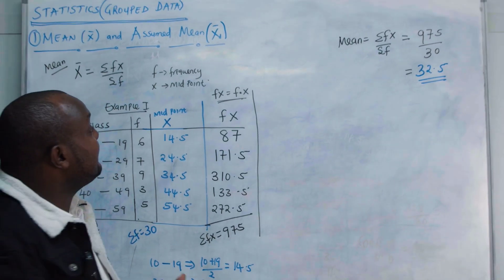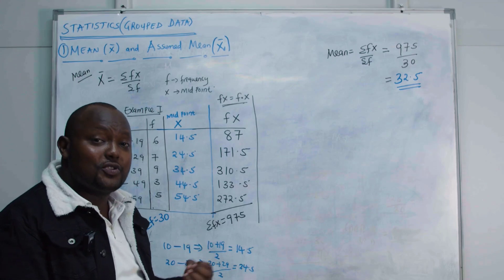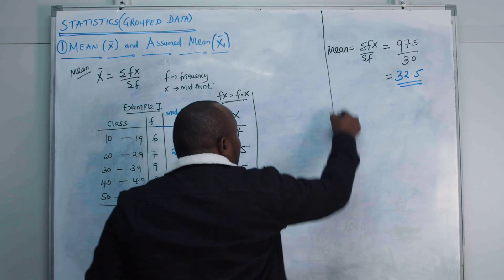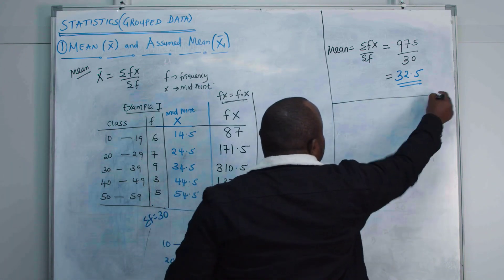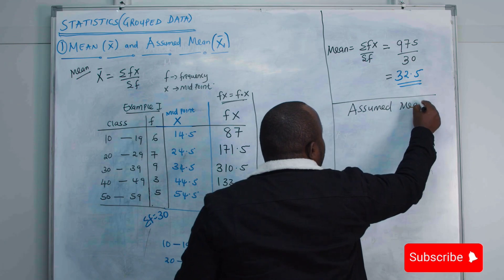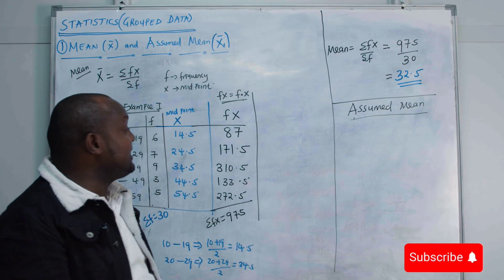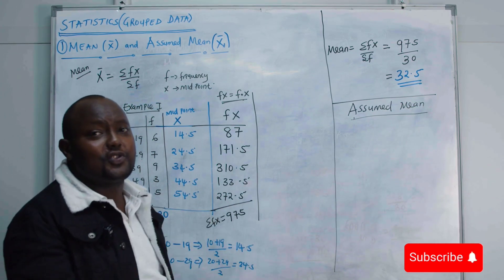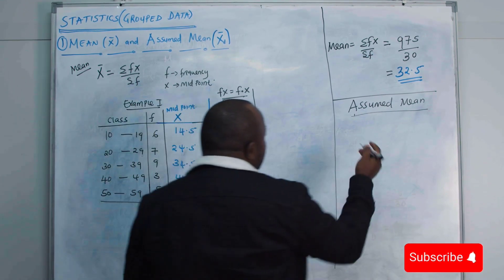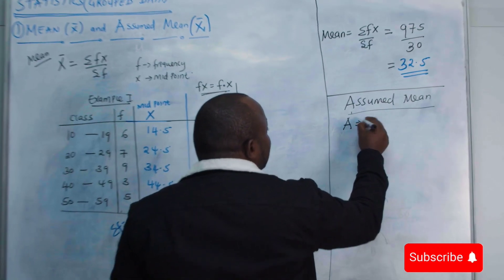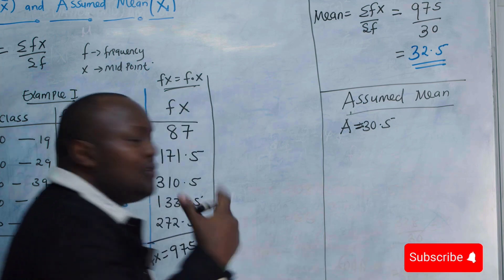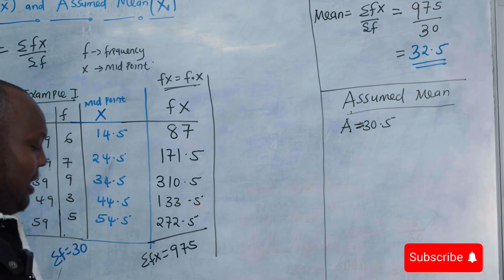Now the question arises: how do we calculate the mean using what we call the assumed mean? With the assumed mean method, you assume what your mean is and then work with that to calculate the exact mean. In this case I am going to assume my mean is 30.5.